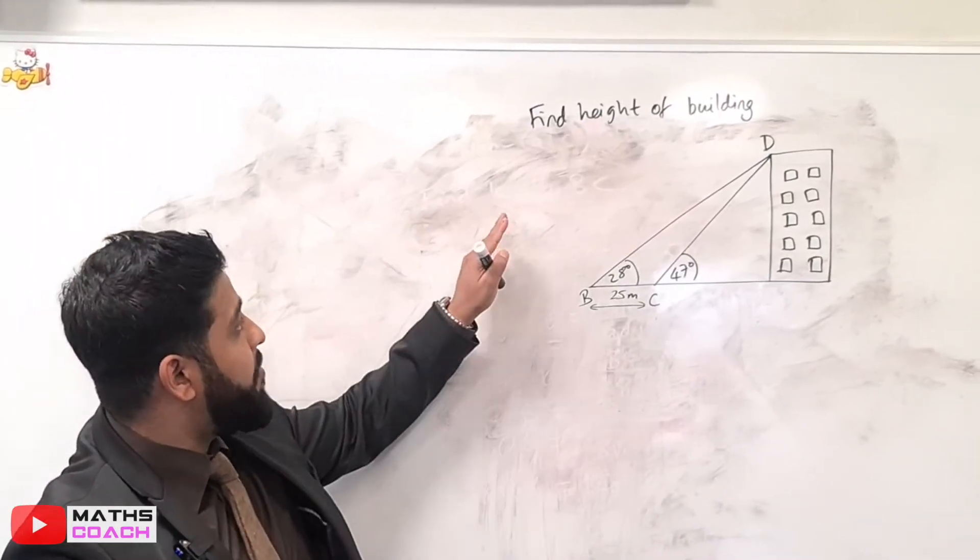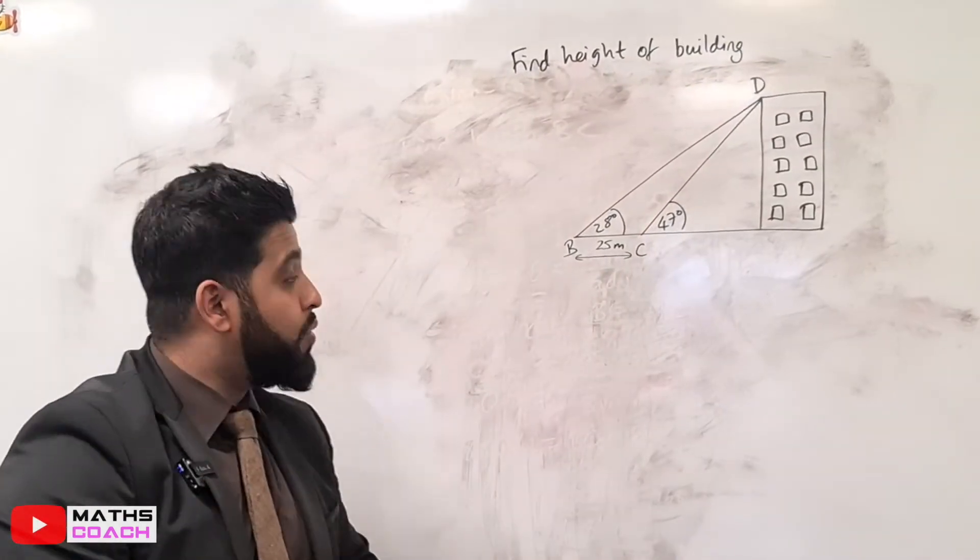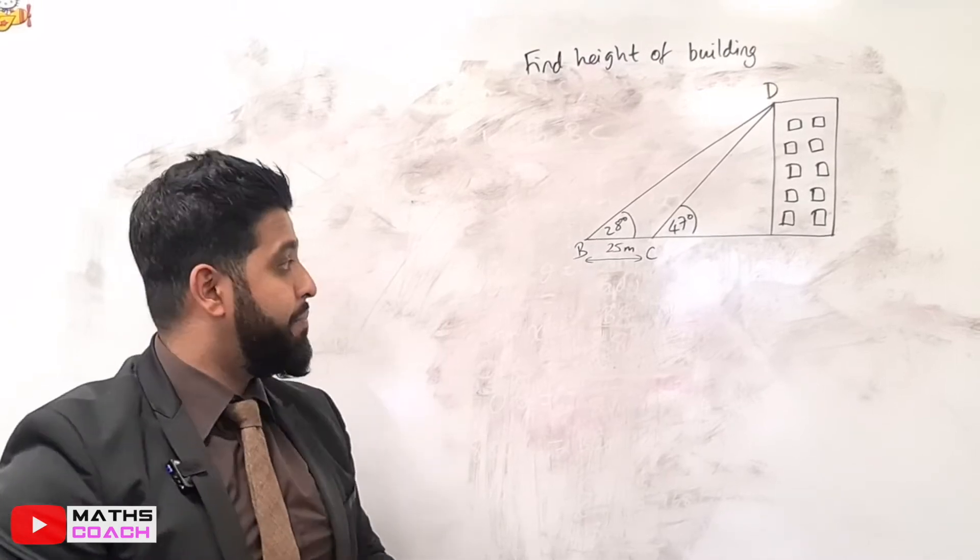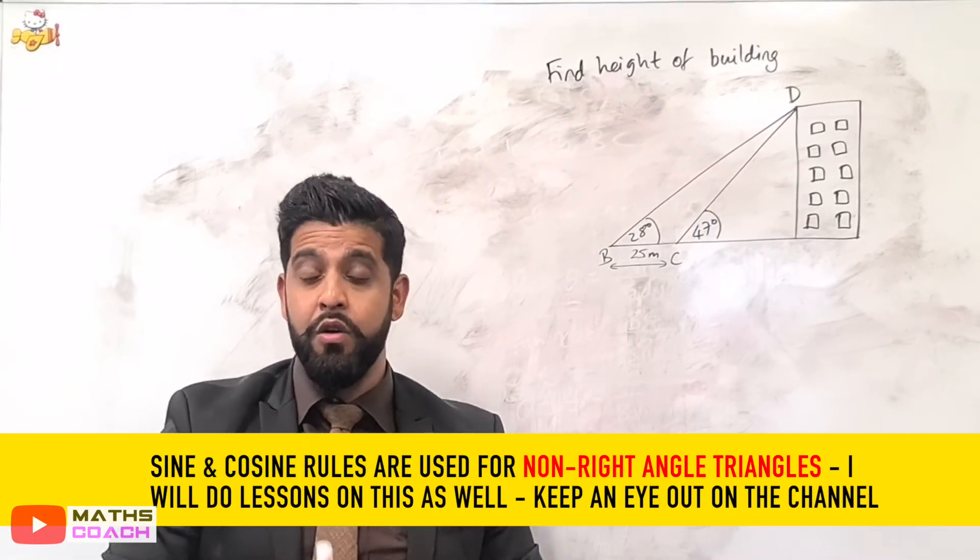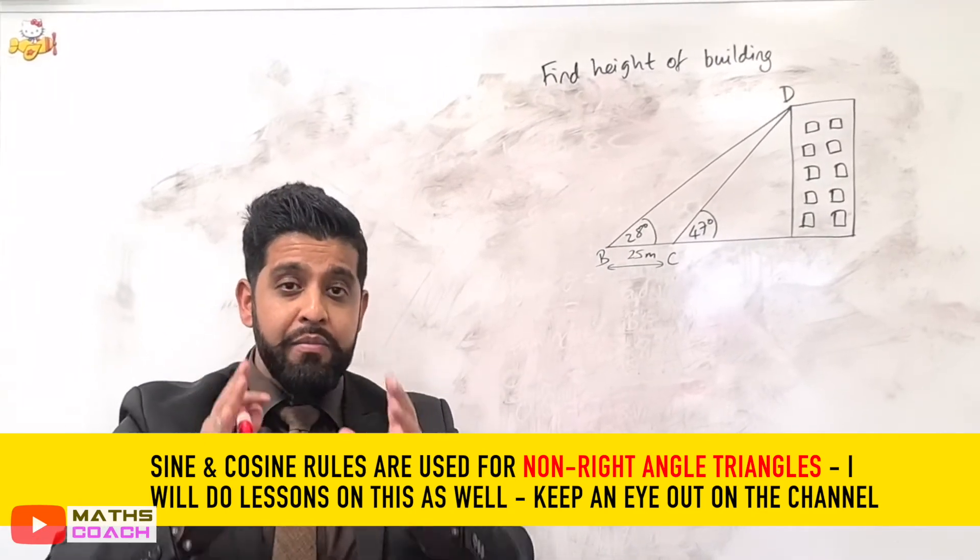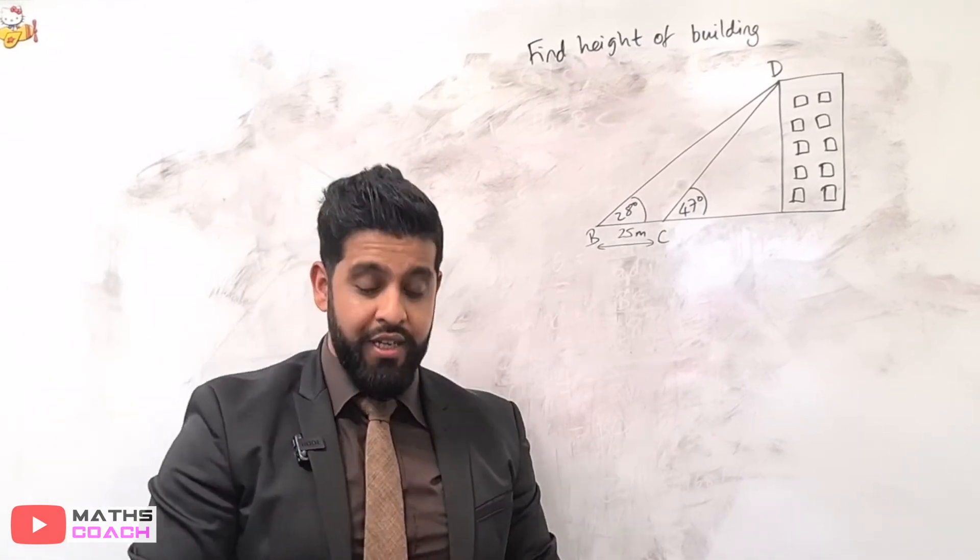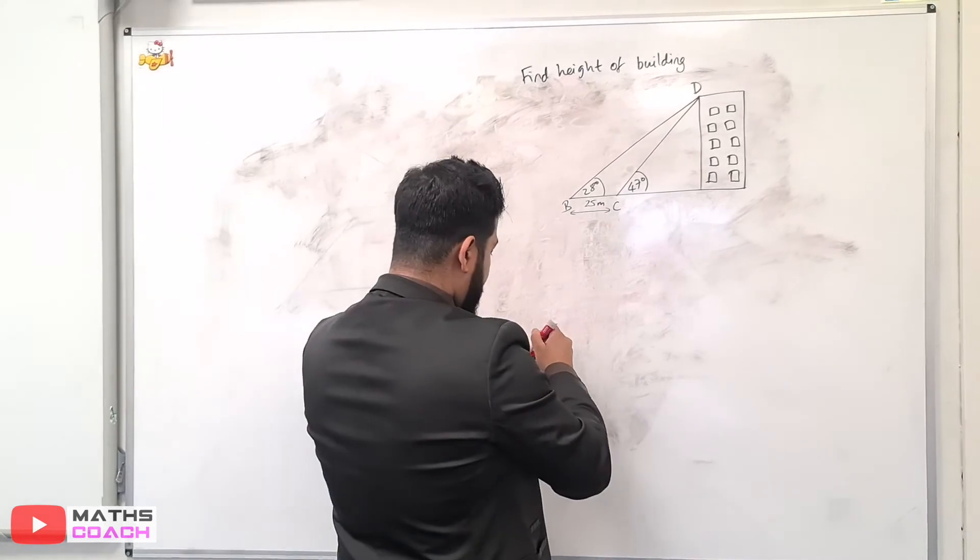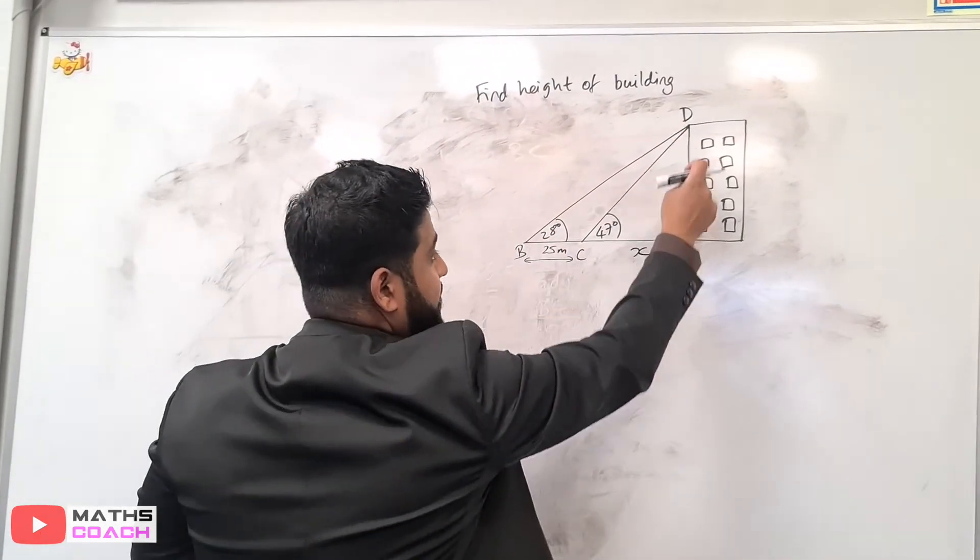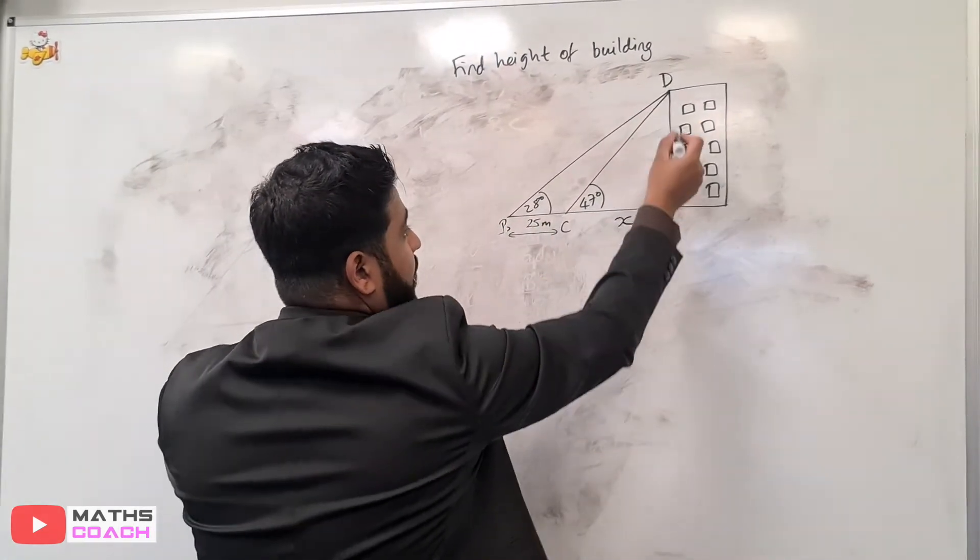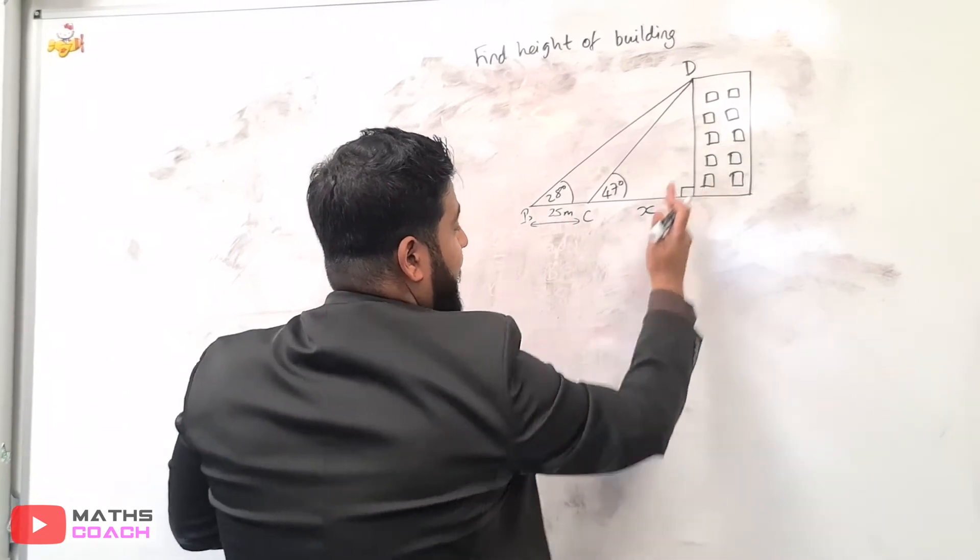We are going to look at this question next. Find the height of this building. We have two points here, B and C, which we have been given the angle 28 and 47. They're also called the angle of elevation as well. So you might see that in your exam paper, the angle of elevation, or in your textbook. We are told that we need to find the height of this building. You can apply the sine rule and the cosine rules here, whichever one applies. But I am going to use exclusively Pythagoras and or trigonometry to answer these questions so that you can get stronger with those techniques.